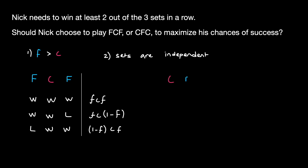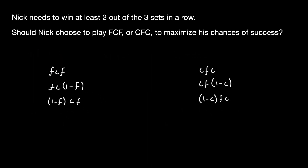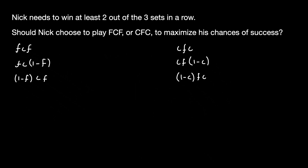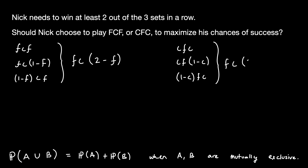We can follow the same set of steps to map out the probabilities for the champion-friend-champion case. Now let's work to find the probabilities of winning the overall match given these set configurations. Remember, the probability of A or B is equal to the probability of A plus the probability of B when A and B are mutually exclusive events. This is the case in our example because Nick cannot both win all three sets and win only two sets and lose one. Therefore, we can simply add these probabilities to get the combined probability of winning the overall match given these two configurations.